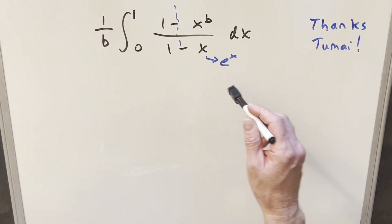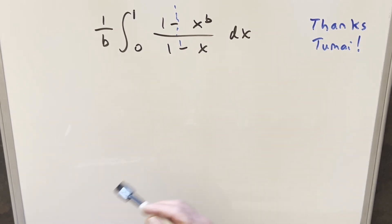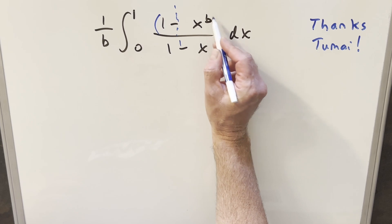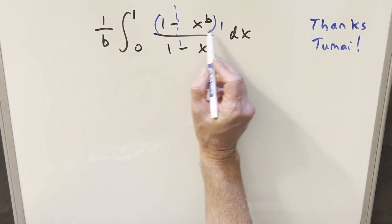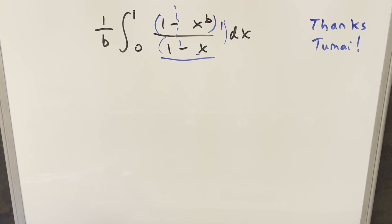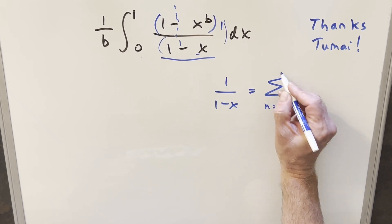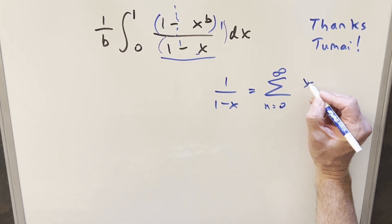So what I want to do instead is leave this all together. And what I want to notice is if we create a 1 somewhere, 1 over 1 minus x is perfectly set up for us to use the geometric series formula. 1 over 1 minus x is the same thing as the sum from n equals 0 to infinity of x to the n.